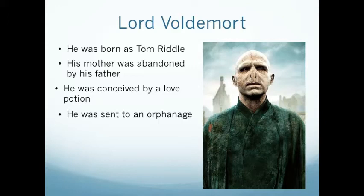As a boy, he was known as Tom Riddle and was a student at the Hogwarts School. Tom's mother was abandoned by her husband — Tom's father — after she told him she was a witch. Moreover, she used a love potion to make his father fall in love with her. She also died very shortly after Tom was born. First, he was looked after by an aunt, but later he was sent to an orphanage.